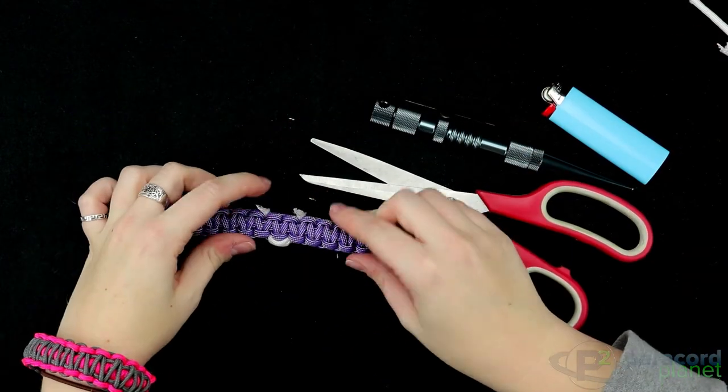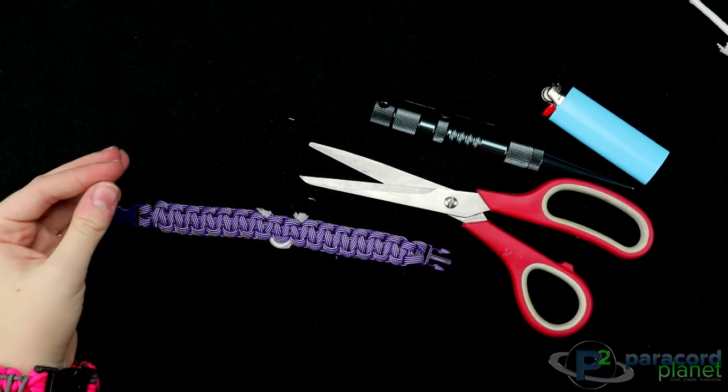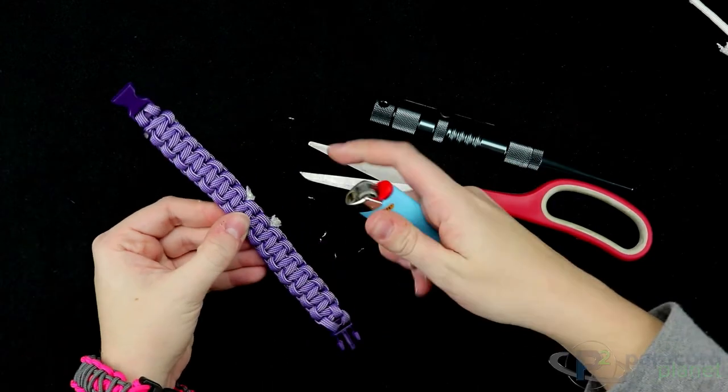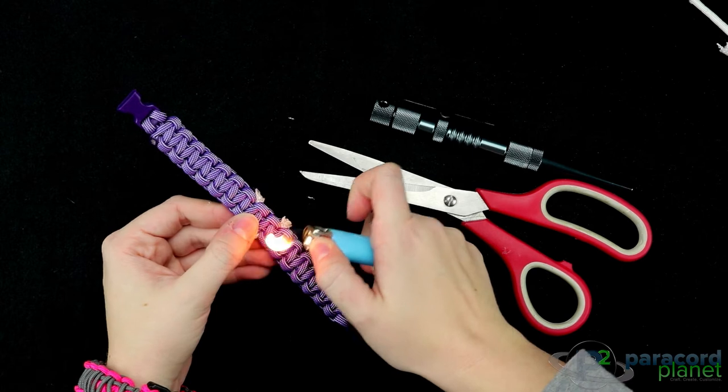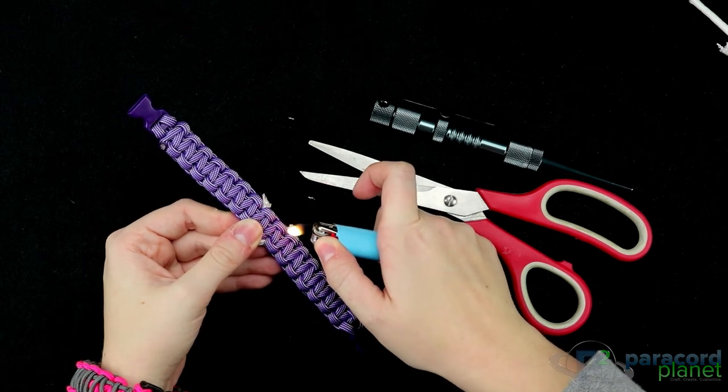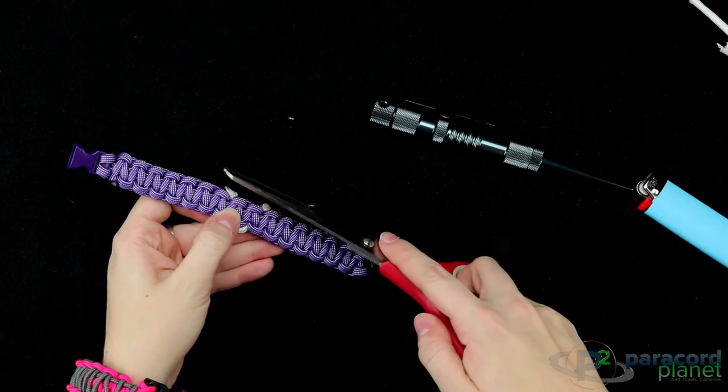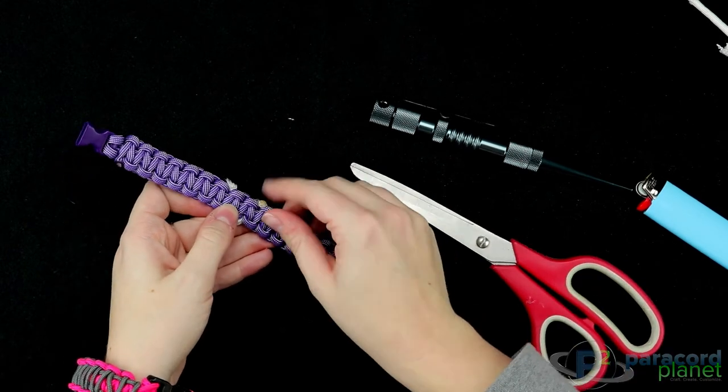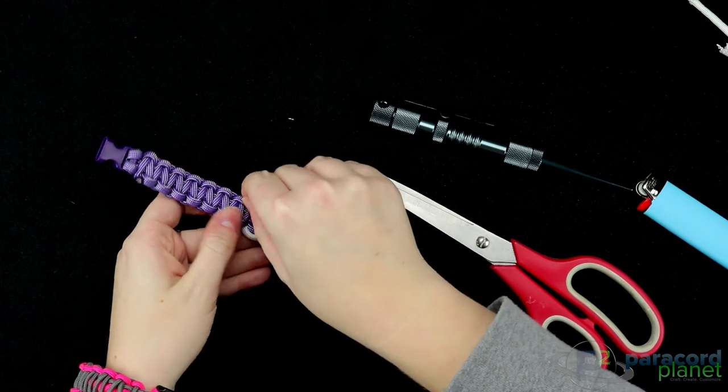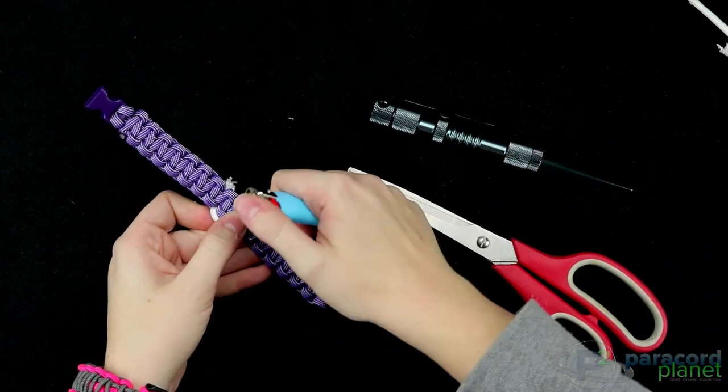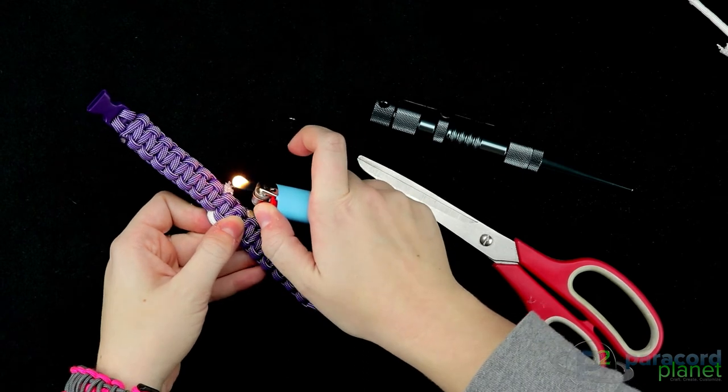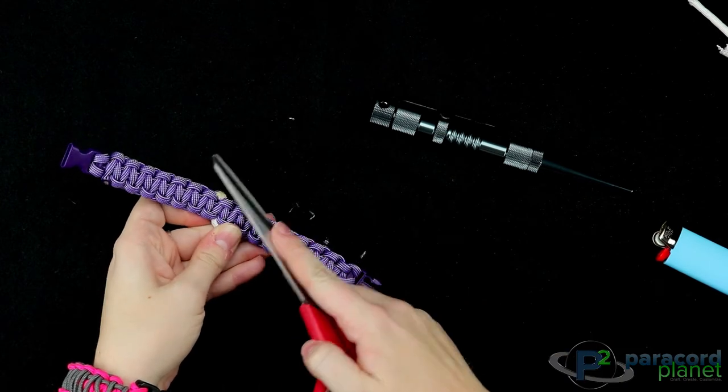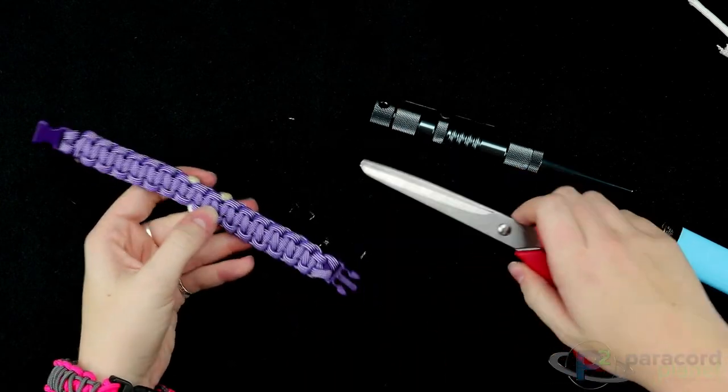So we're going to want to melt the ends of the paracord right here to the back of the bracelet. That way they won't show when you actually wear it. So we'll take our lighter and melt that first end. And you'll want to use your scissor to push that melted end of the cord nice and flat against your bracelet. You'll want to melt that other end. And push that flat against your bracelet.